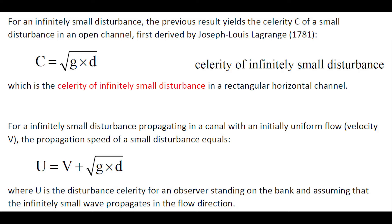For an infinitely small disturbance propagating in a canal with an initial uniform velocity v, the propagation speed of the disturbance is u equals v plus the square root of gd, where u is the disturbance celerity for an observer standing on the bank, assuming a small wave propagating in the flow direction.